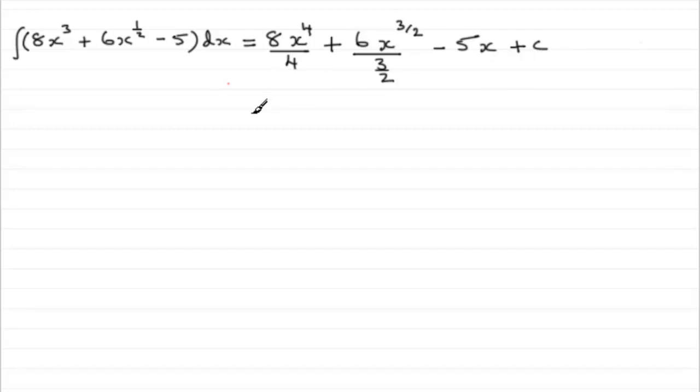Now all we need to do is clean up each of these terms. So the first one, nice and easy, the 4 cancels straight into that 8, then going twice. So you're going to get 2x to the power 4.